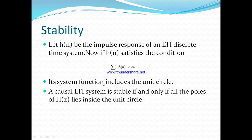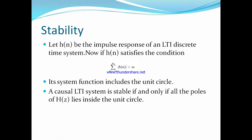One condition for stability is that the system transfer function H(z) must include the unit circle in its ROC. A second condition is that for a causal LTI system to be stable, all the poles of H(z) must lie inside the unit circle. If both these conditions are satisfied, we can say the system is stable.